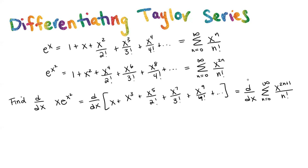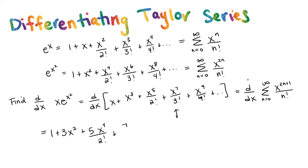Let's go ahead and take this derivative. The derivative of x is 1. The derivative of x cubed is 3x squared. The derivative of x to the 5 over 2 factorial is 5x to the 4 over 2 factorial. The derivative of x to the 7 over 3 factorial is 7x to the 6 over 3 factorial. The derivative of x to the 9 over 4 factorial is 9x to the 8 over 4 factorial and so on.